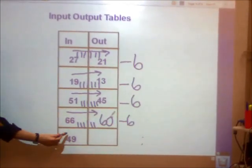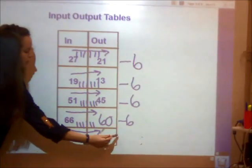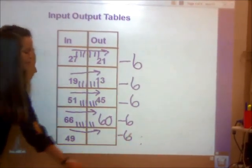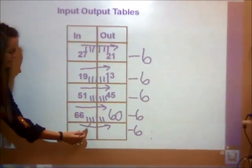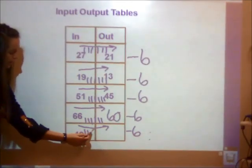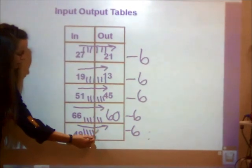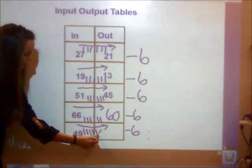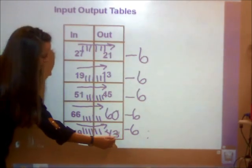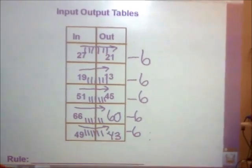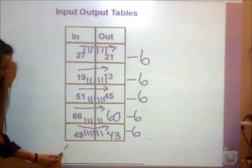My next input is 49. Well, if my pattern is minus 6, I'm going to take away 6. 49, 48, 47, 46, 45, 44, 43. My rule must be minus 6.